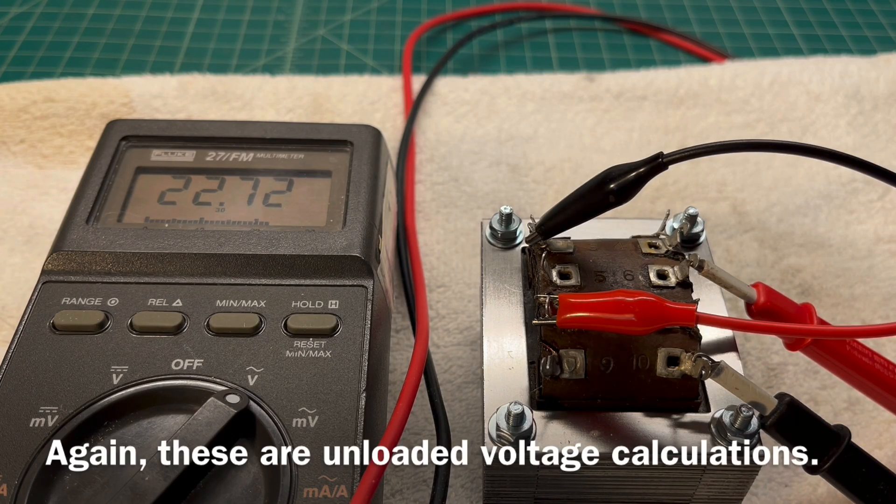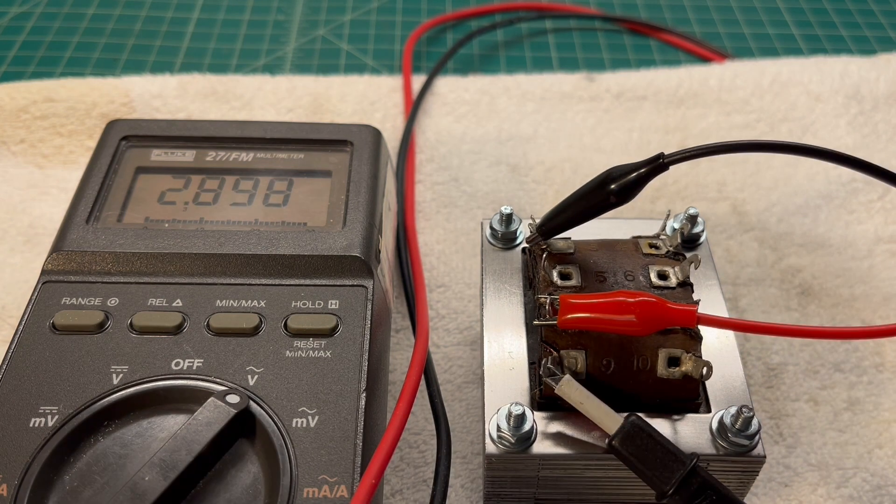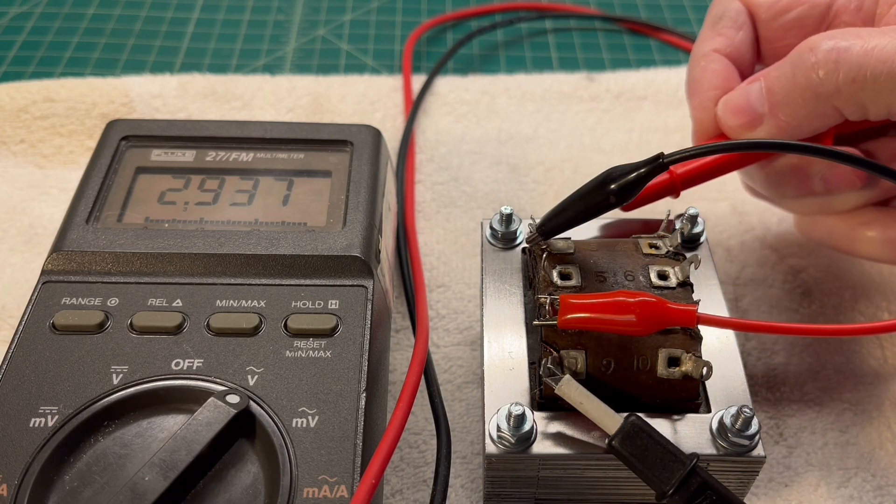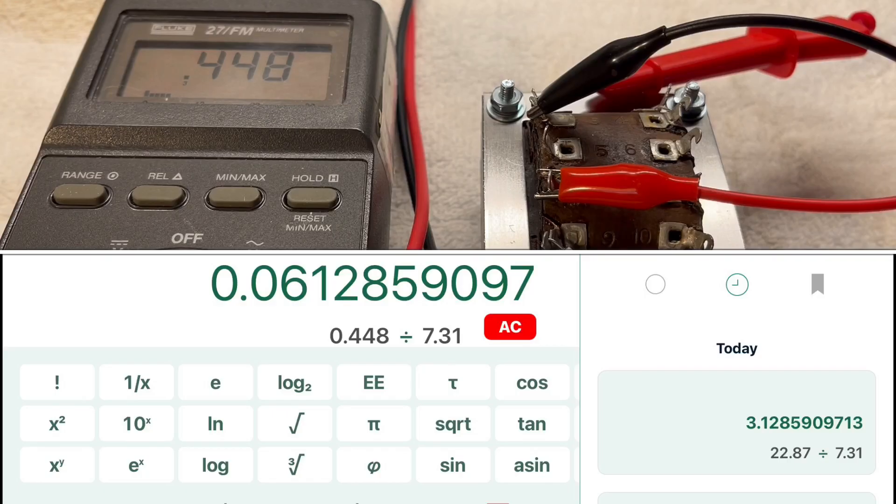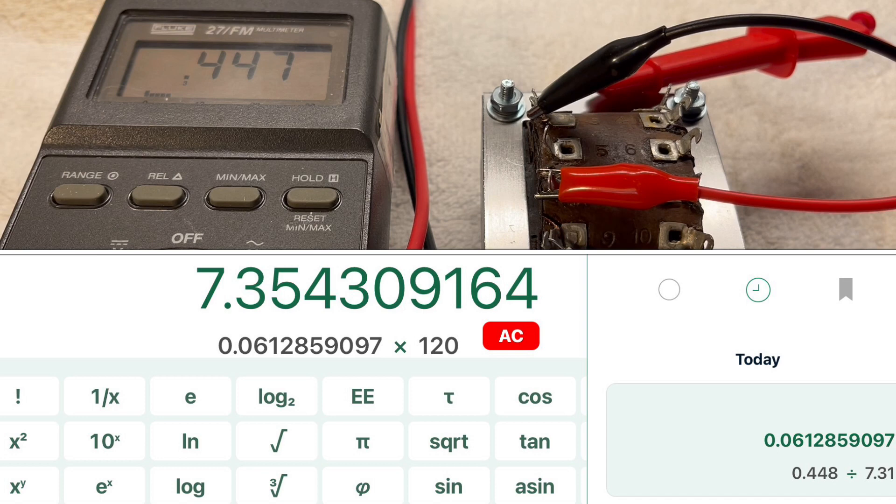We'll do one of the secondaries on the low voltage side as an example. We'll go one to nine here, that would be the 6.3 volt winding. You can see we're at 0.448. Divide that by 7.31, and that gives us a ratio of 0.061285. Multiply that by 120, and you can see unloaded, theoretically we have around 7.35 volts.